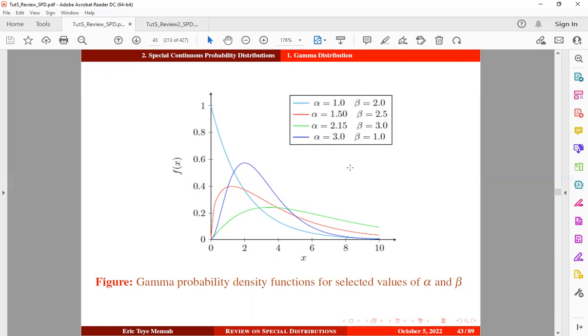And this distribution is used extensively in queuing theory to model waiting time problems. Now for the last case, when we set alpha to be equal to n divided by 2, when n is a degree of freedom, and we set beta to be equal to 2, we obtain another special case of the gamma distribution known as the chi-square distribution. So just take note of that.